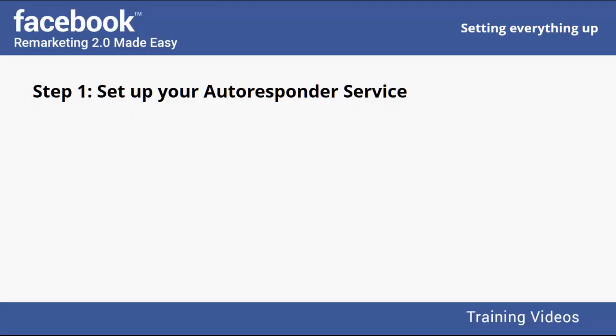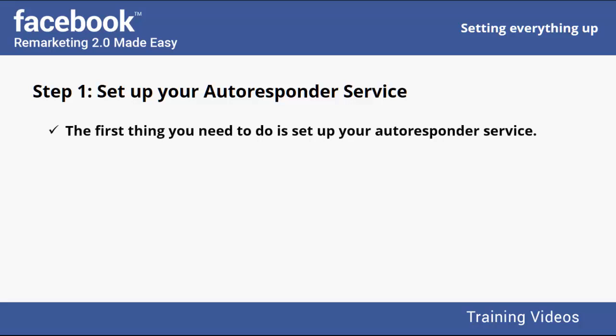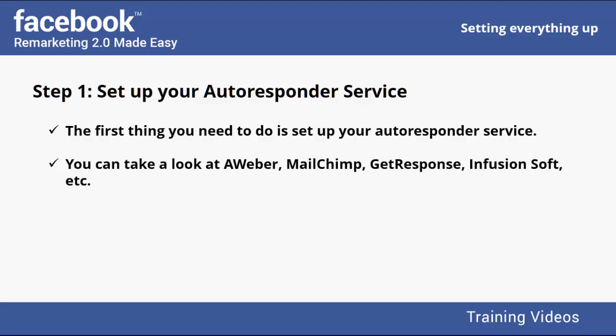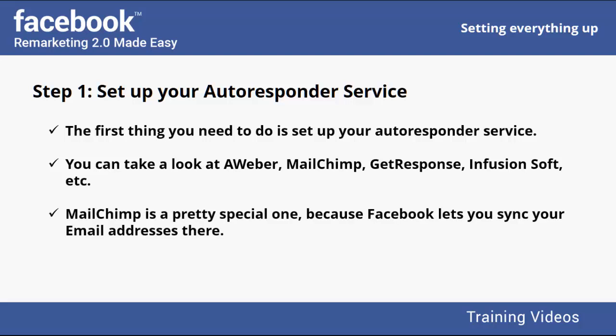Step 1: Set up your Autoresponder service. An Autoresponder is a service used to capture email addresses and send emails to them, usually for marketing purposes. If you don't have one yet, there are amazing options to choose from, such as AWeber, MailChimp, GetResponse, and Infusionsoft. MailChimp is a particularly special one because Facebook lets you sync your email addresses there and create your custom audience automatically.